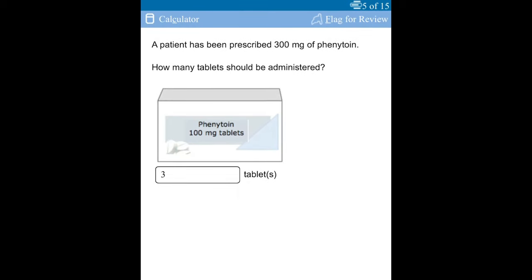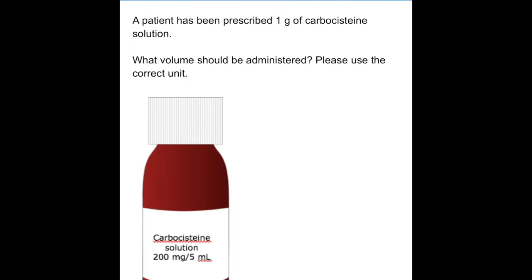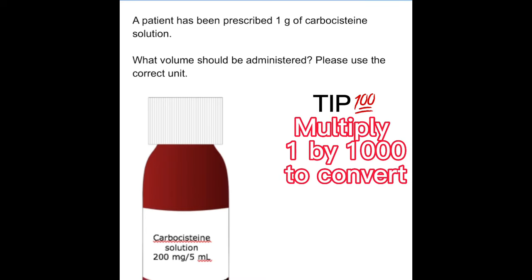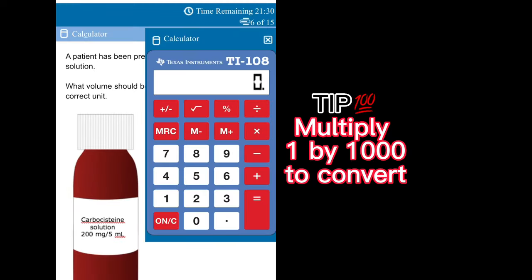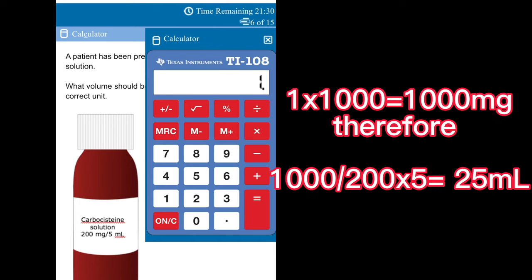With the next question, have a careful look at the unit. You realize that the prescribed unit comes in grams but the available dose is in milligram per mL, so we have to do that conversion first. Convert one gram by multiplying by thousand, and then from there divide by your available dose per mL.